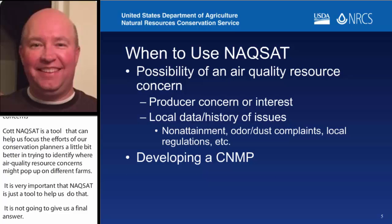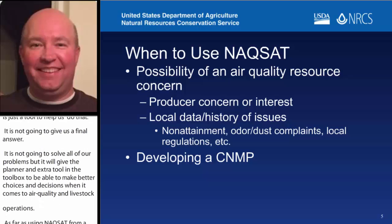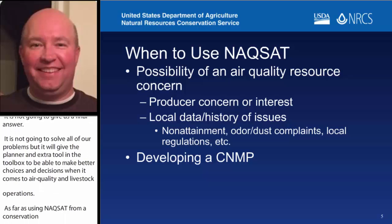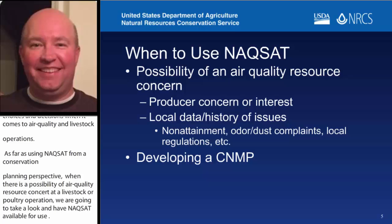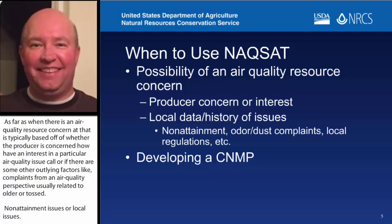As far as using NACSAT from a conservation planning perspective, when there's a possibility of an air quality resource concern at a livestock or poultry operation, we're going to have NACSAT available for use. Typically, an air quality resource concern is based on whether the producer has an interest in a particular air quality issue, or if there are other factors like complaints related to odor or dust, non-attainment issues, any local regulations — those are the kinds of triggers where you might have an air quality resource concern, and then we can go ahead and use NACSAT to try to figure out what those might actually be.